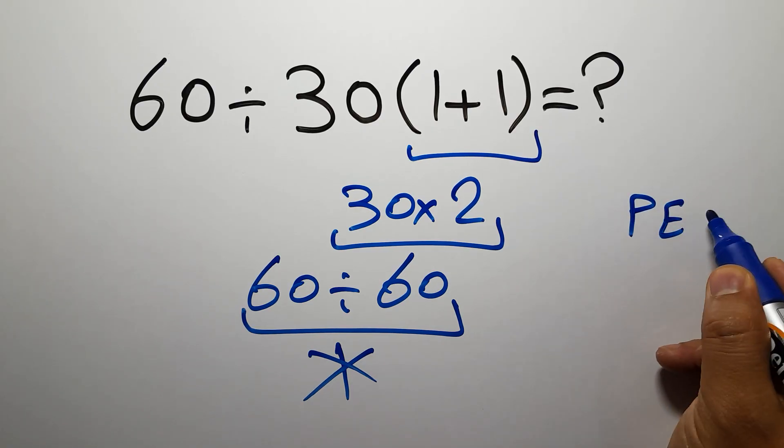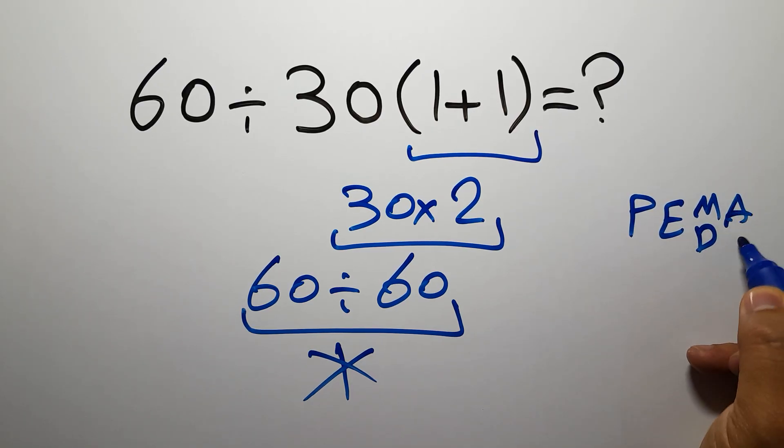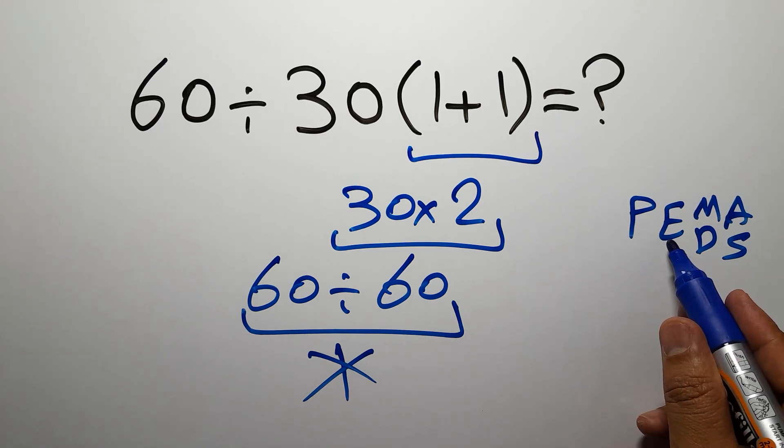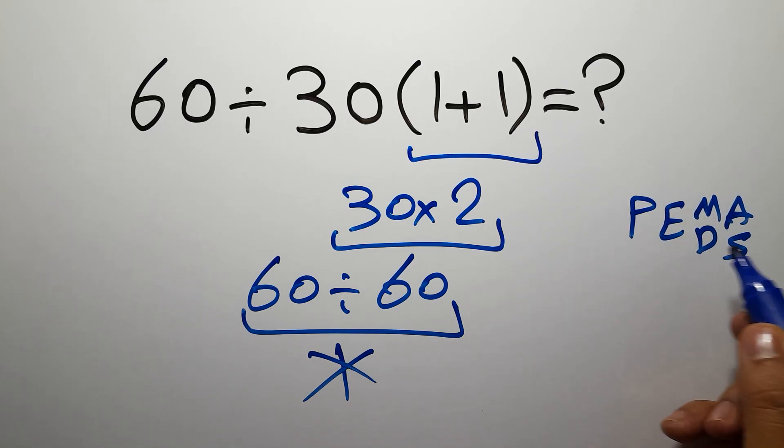...which is PEMDAS, first we have to do parentheses, then exponents, then multiplication or division, and finally addition or subtraction. Remember that multiplication and division have equal priority and we have to work from left to right.